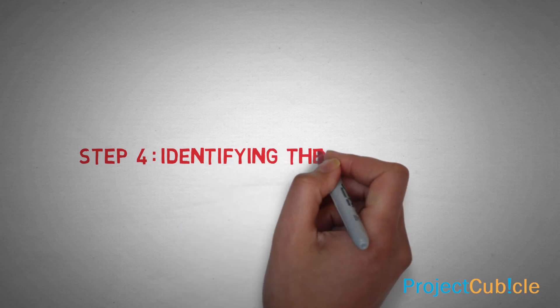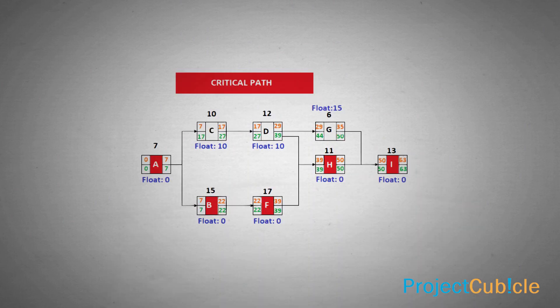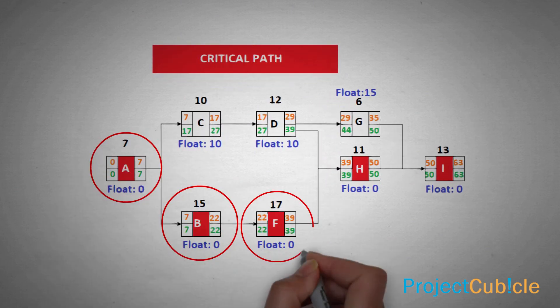Step 4. Identifying the critical path. The critical path is the longest path in the network diagram and the total float of the critical path is zero. In this example the critical path is on the A, B, F, H, I activities.